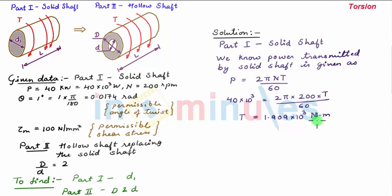So if you convert this into newton mm, we have T = 1.909×10⁶ N·mm. Now since nothing is mentioned about maximum torque, we take the maximum torque Tm same as that of mean torque T, whose value is 1.909×10⁶ N·mm.